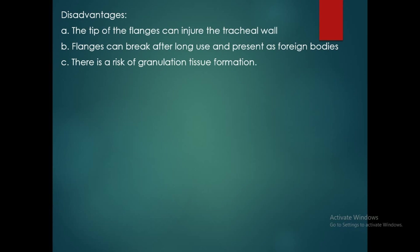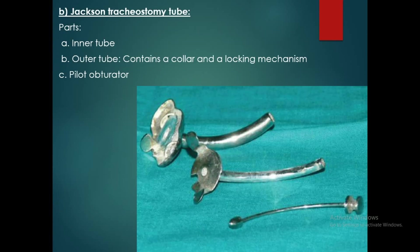Disadvantages of Fuller's tube: the tip of the flanks can injure the tracheal wall, the flanks can break after long use and present as foreign bodies, and there is a risk of granulation tissue formation.